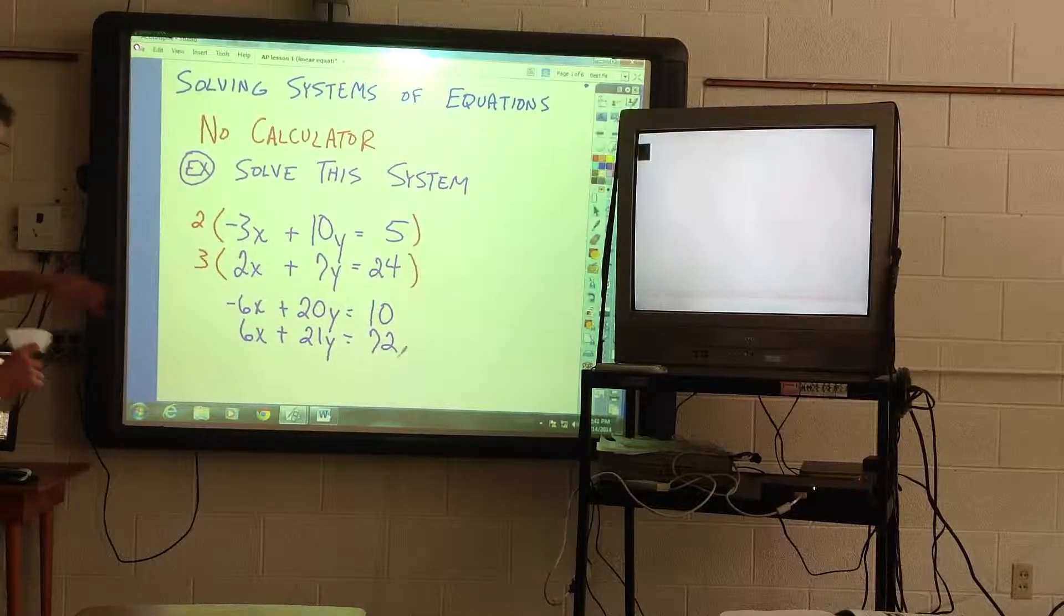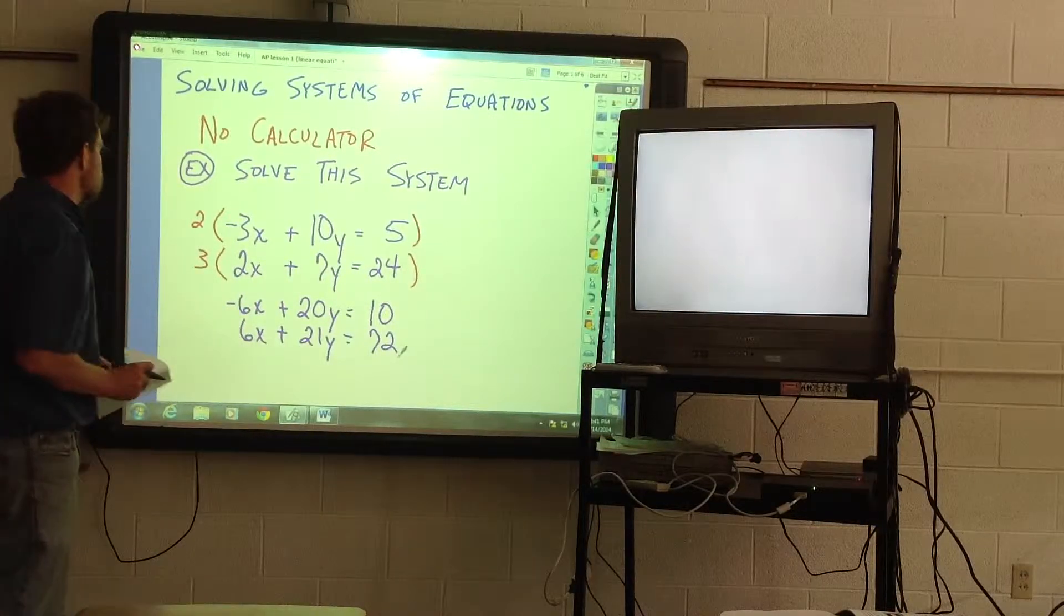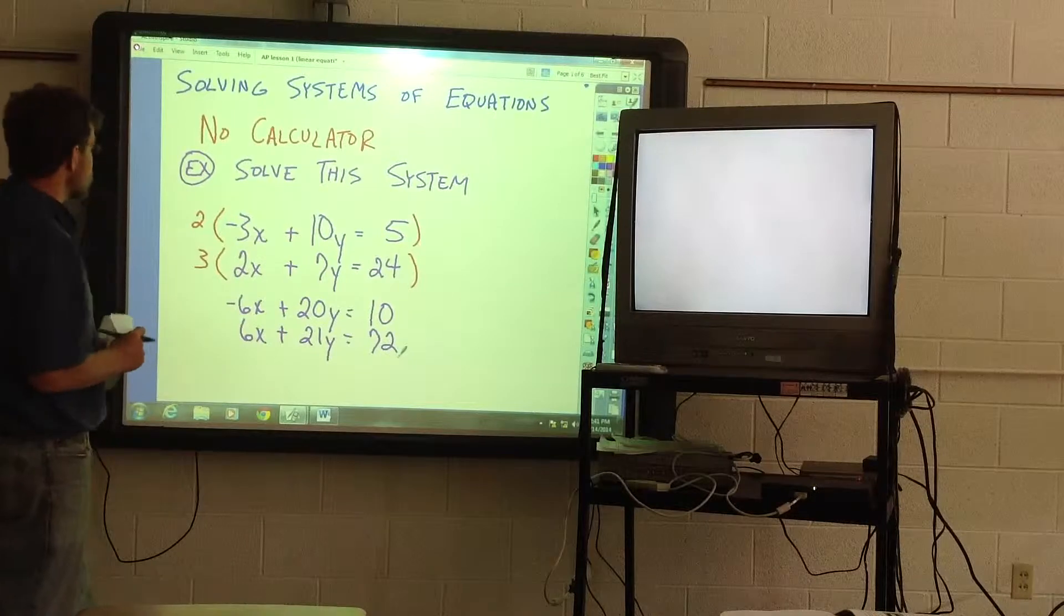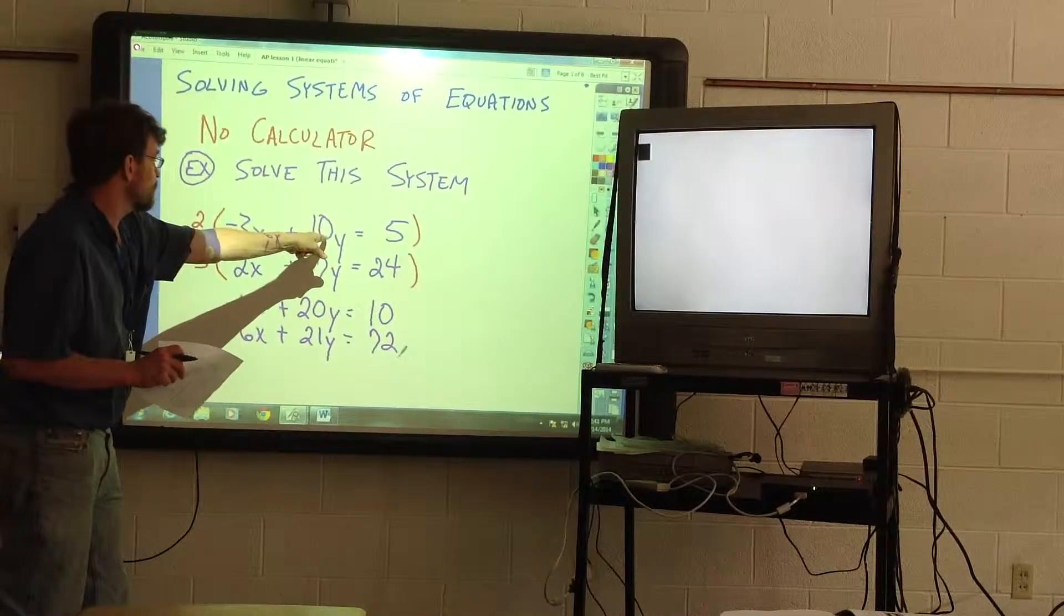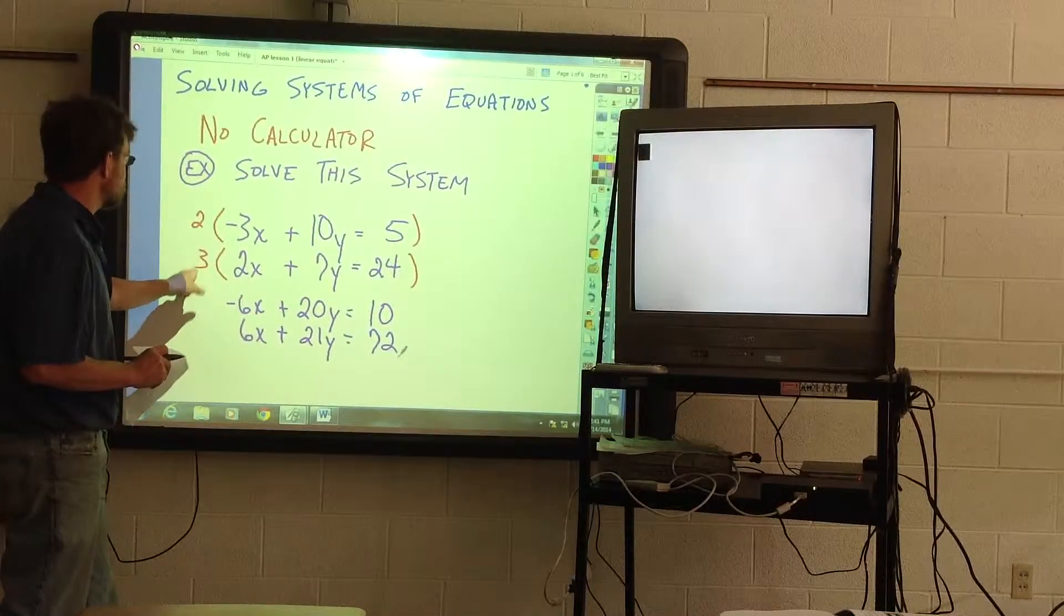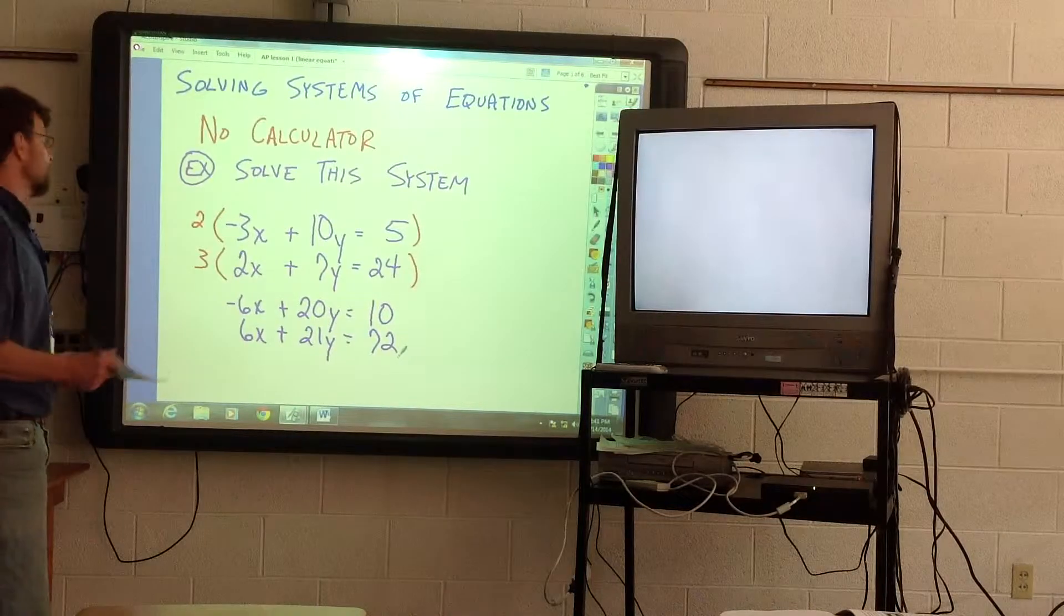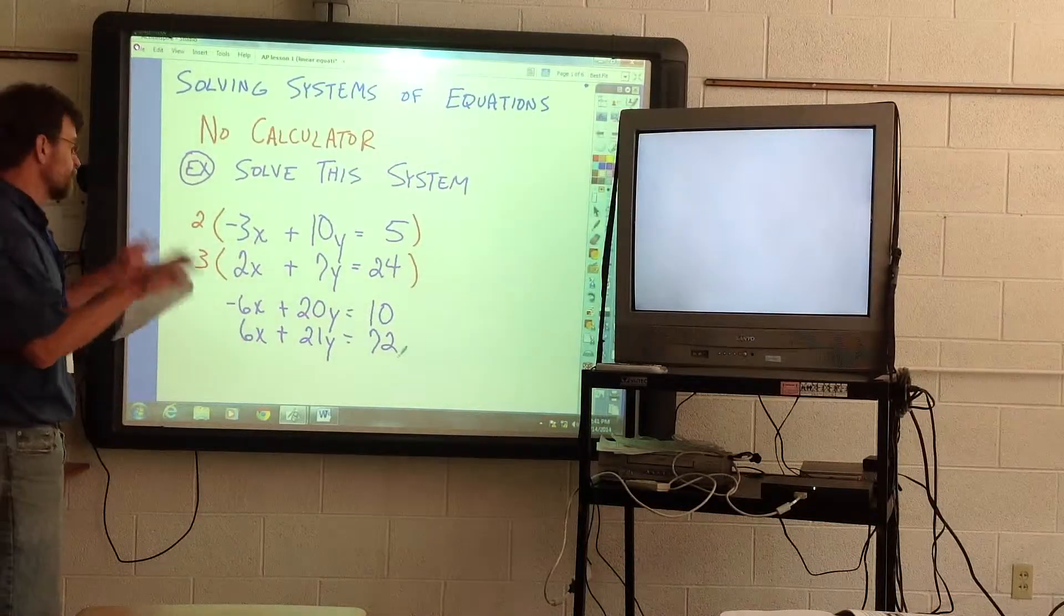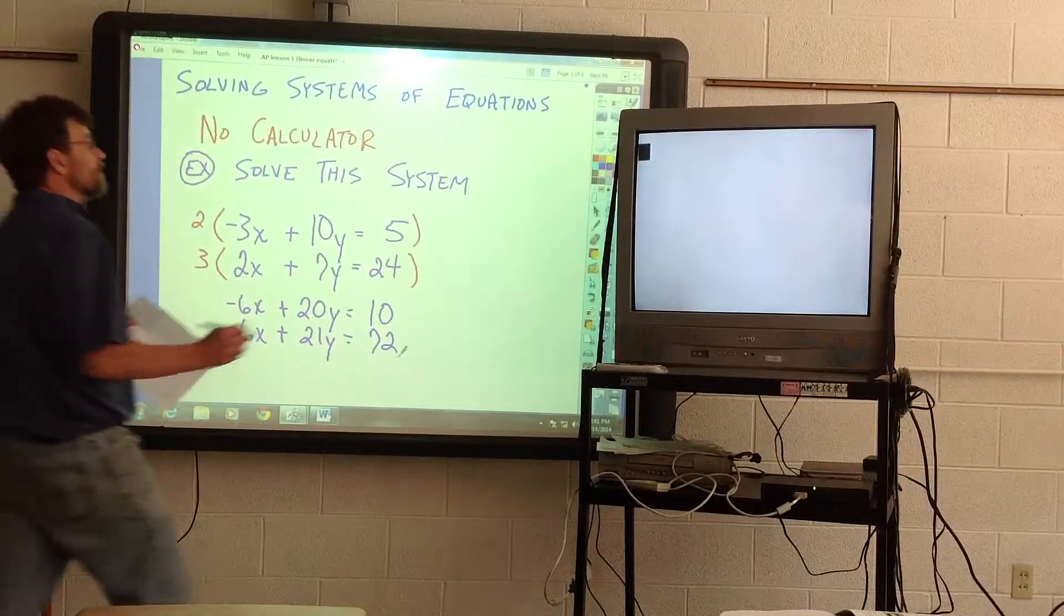All right. Notice how we get negative 6X and 6X. So when we add them together, they will cancel. If you were to eliminate the Ys, you could have multiplied the top by negative 7 so you get negative 7Y, and the bottom by positive 10 so you get 70Y, and then they would have canceled that way. Again, this is totally up to you which one you choose to eliminate and what method to do.